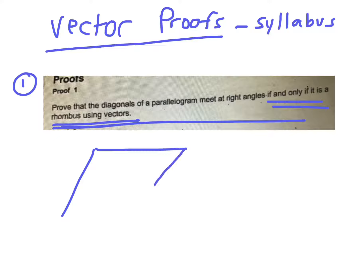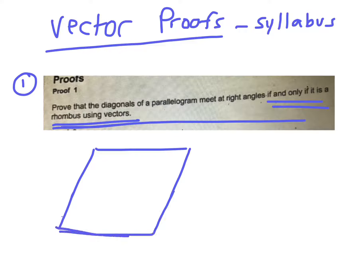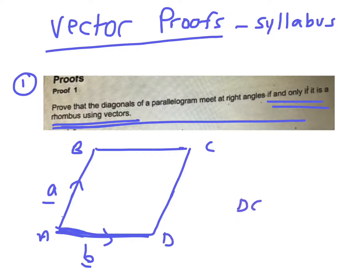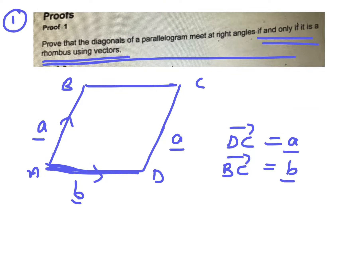Let's draw up a parallelogram. If this parallelogram is a rhombus, then we want to show that the diagonals meet at right angles. We'll call the sides a and b — so if it is a parallelogram ABCD, then DC also equals a and BC equals b. If it is a rhombus, the sides are equal, so the magnitude of a equals the magnitude of b.